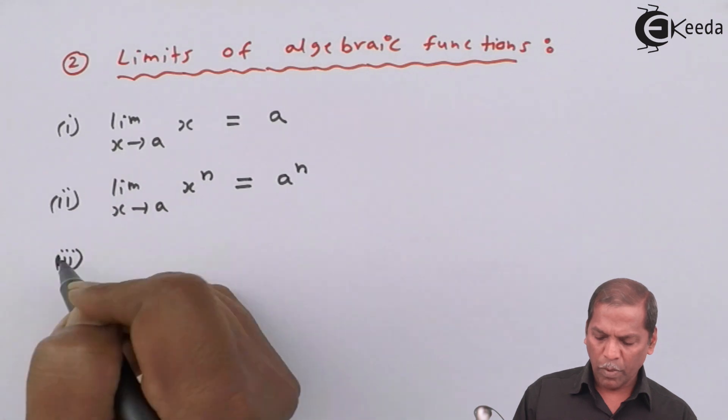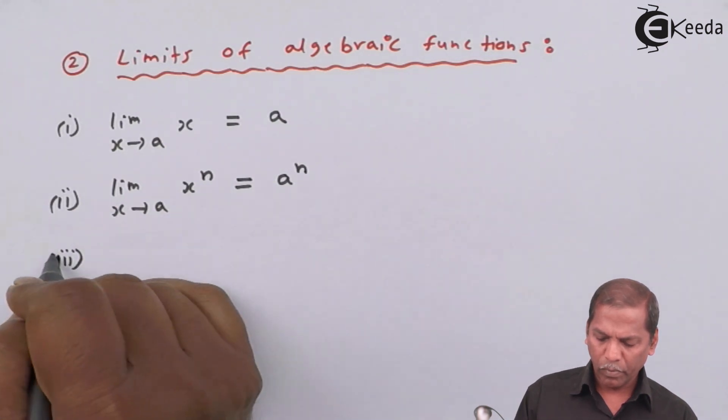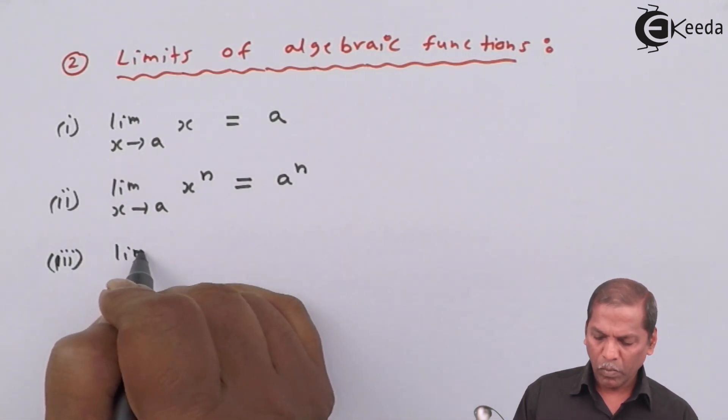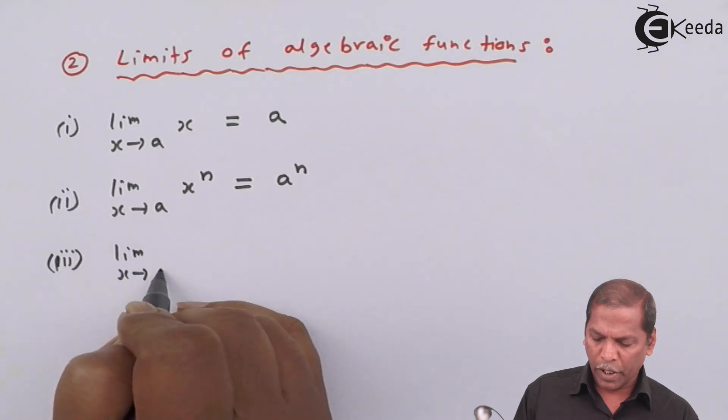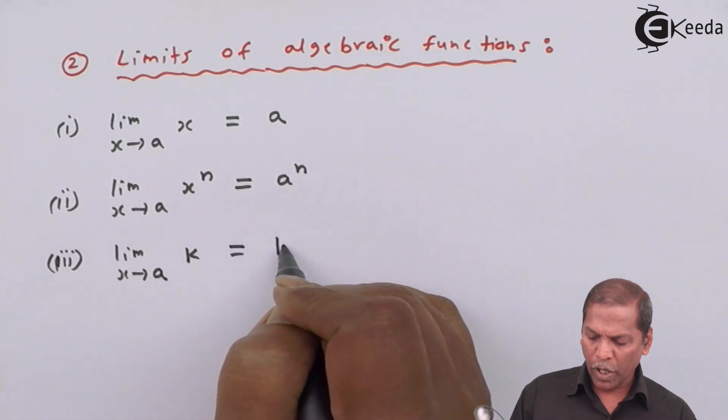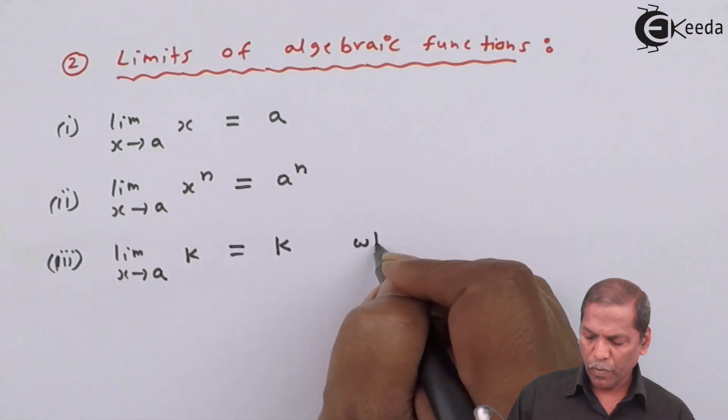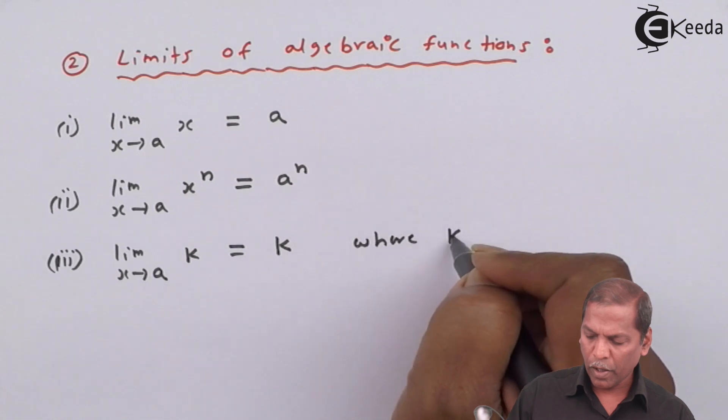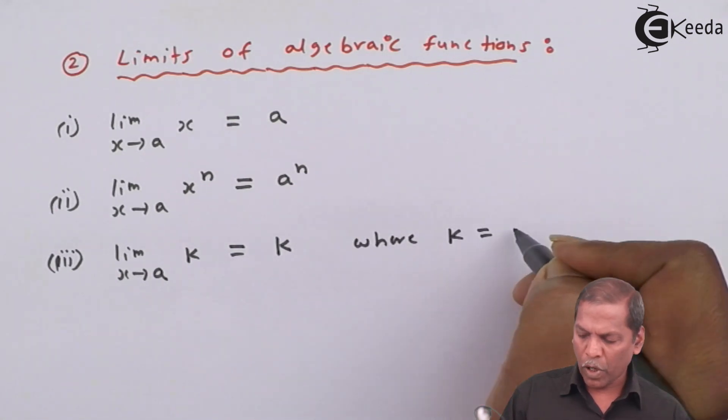Number three: limit x approaches a of k equals k, where k is a constant.